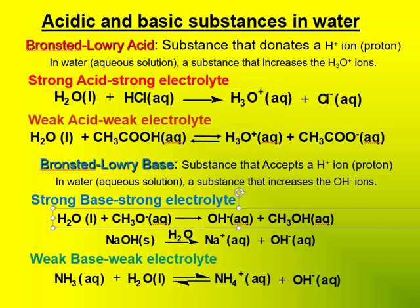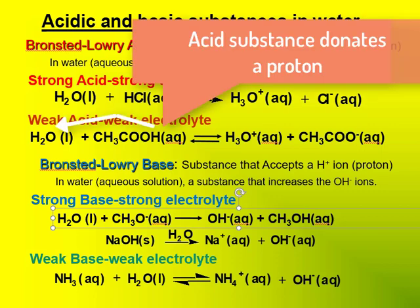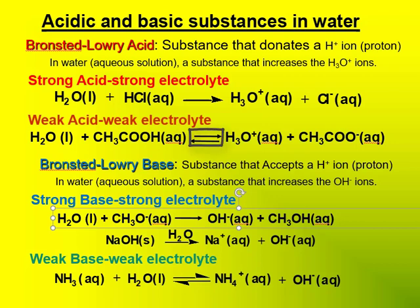There are two types of acids we will consider: strong acids, which are strong electrolytes, and weak acids, which are weak electrolytes. In the first example of a strong acid, we can see the H from HCl, the acidic substance, is donated to water to produce H3O+ and Cl-. In the second example, a weak acid which is a weak electrolyte, water interacts with CH3COOH, which is acetic acid. Because the reaction attains equilibrium — i.e., is reversible — it is a weak electrolyte.